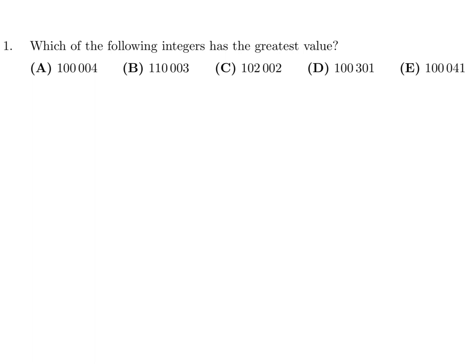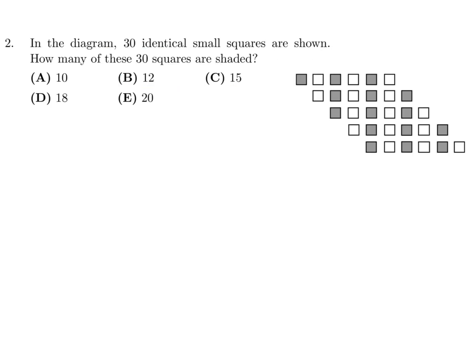Which of the following integers has the greatest value? You look at these integers: one hundred thousand, one hundred ten thousand, one hundred two thousand, one hundred thousand, one hundred thousand. Clearly this is the largest one.